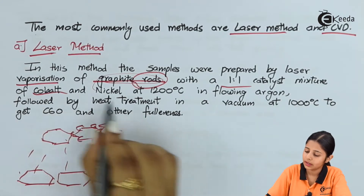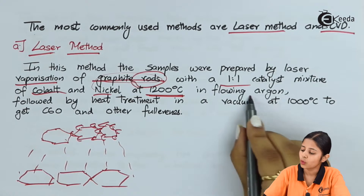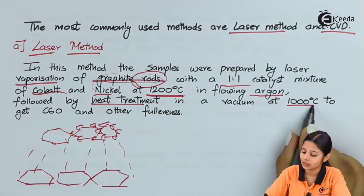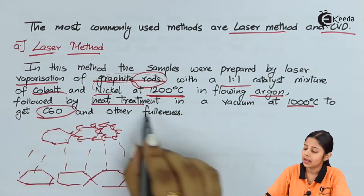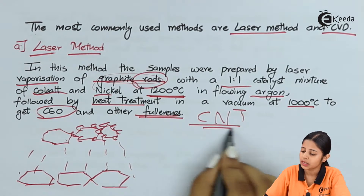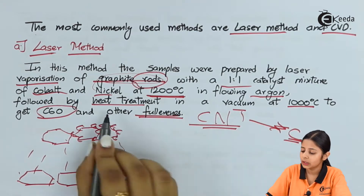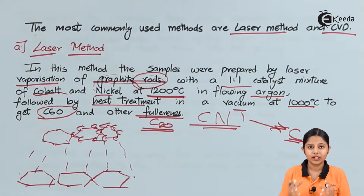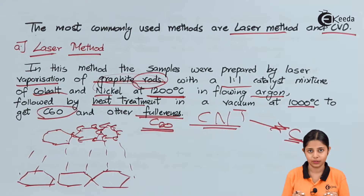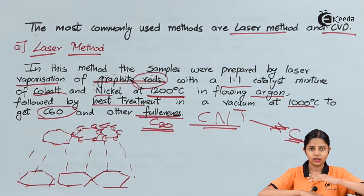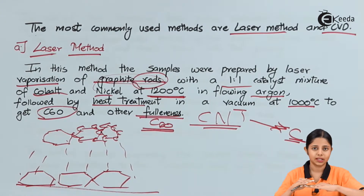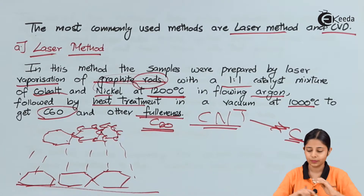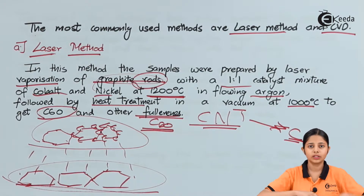The graphite rod is used with a 1:1 catalyst mixture of cobalt and nickel at 1200 degrees Celsius in flowing argon, followed by heat treatment in a vacuum at 1000 degrees Celsius to get C60 fullerene and other types of fullerene. Graphite is used because both fullerenes (C60) and carbon nanotubes are entirely made up of carbon, so the raw material must also be only carbon. The entire graphite rod is only made up of carbons, with both layers connected by van der Waals forces.